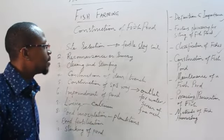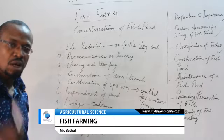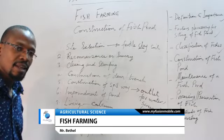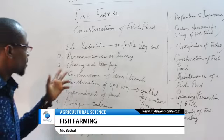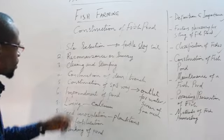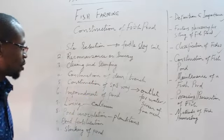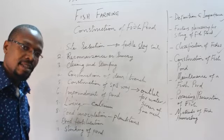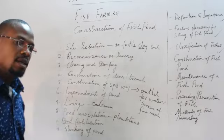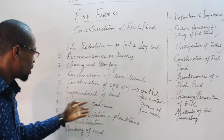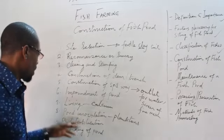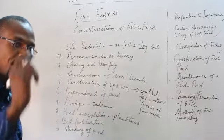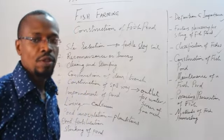These are basically the ten steps to consider in construction of a fish pond: first, site selection; second, survey or reconnaissance; third, clearing and stumping; fourth, construction of a dam and trench; fifth, construction of a spillway as the outlet for water; sixth, impoundment of the pond by introducing water; seventh, introducing limestone and calcium carbonate nutrients; eighth, inoculation — introducing planktons; ninth, pond fertilization; and tenth, you now stock up your pond with fishes.